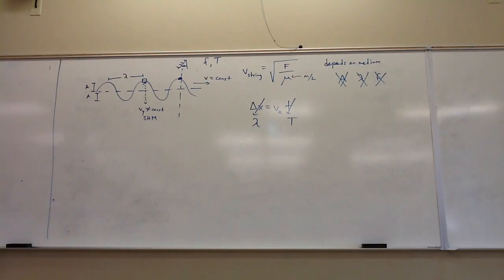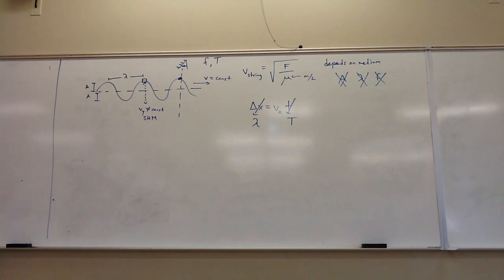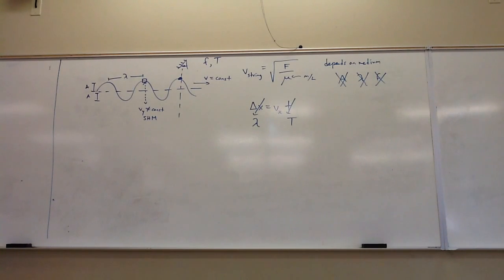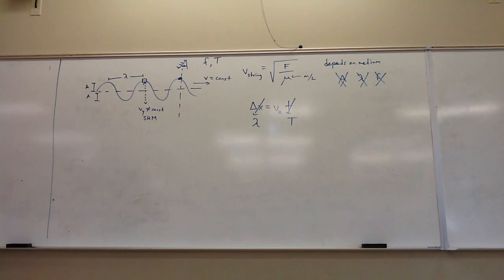The wave moves so fast that one wavelength will pass a fixed point in one period. That's the definition of period — it's the time it takes one wavelength to pass. So if you measure a crest, start your timer, then stop it at the next crest, that's one period, and how much of the wave has passed? Exactly one wavelength. So one wavelength, by definition, passes in one period.